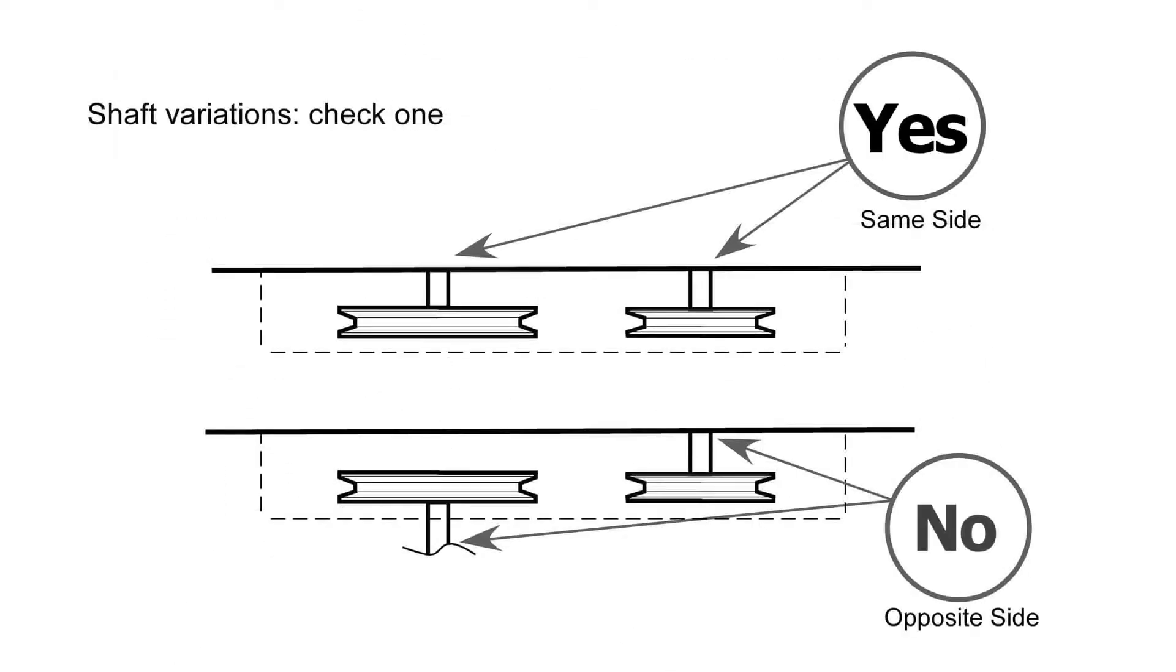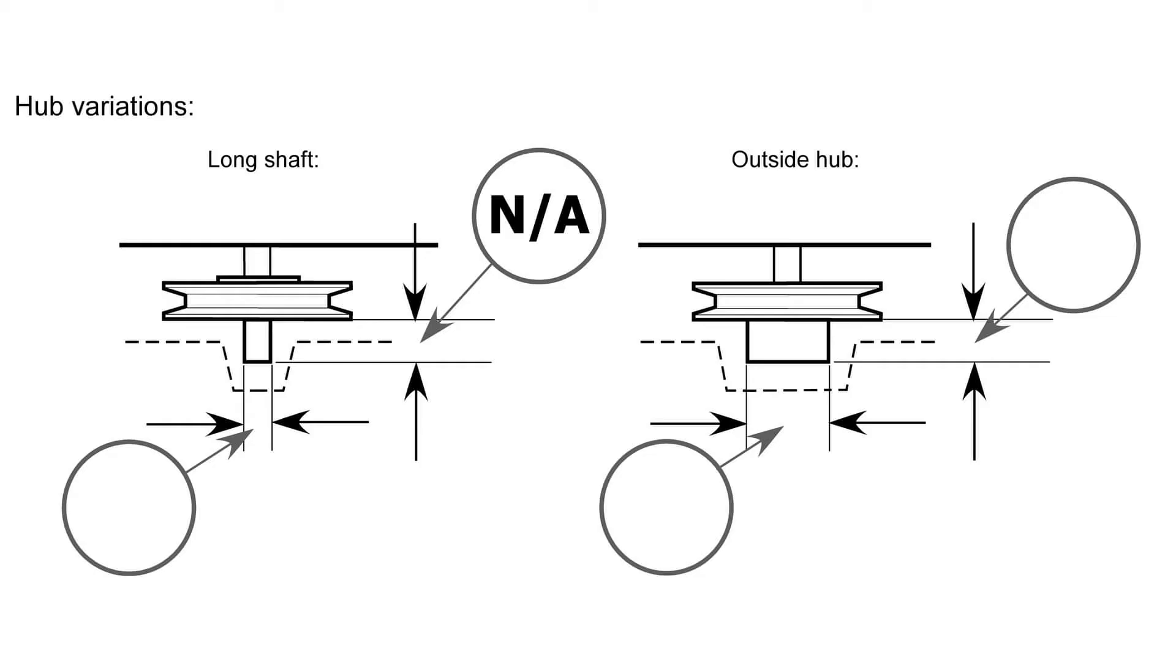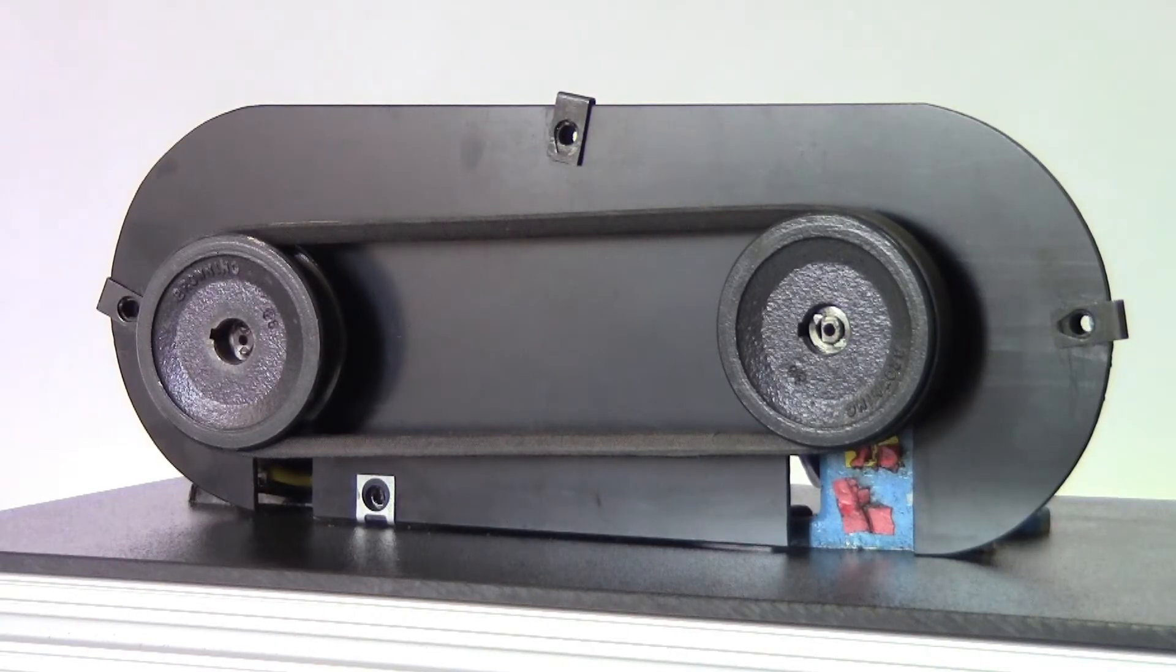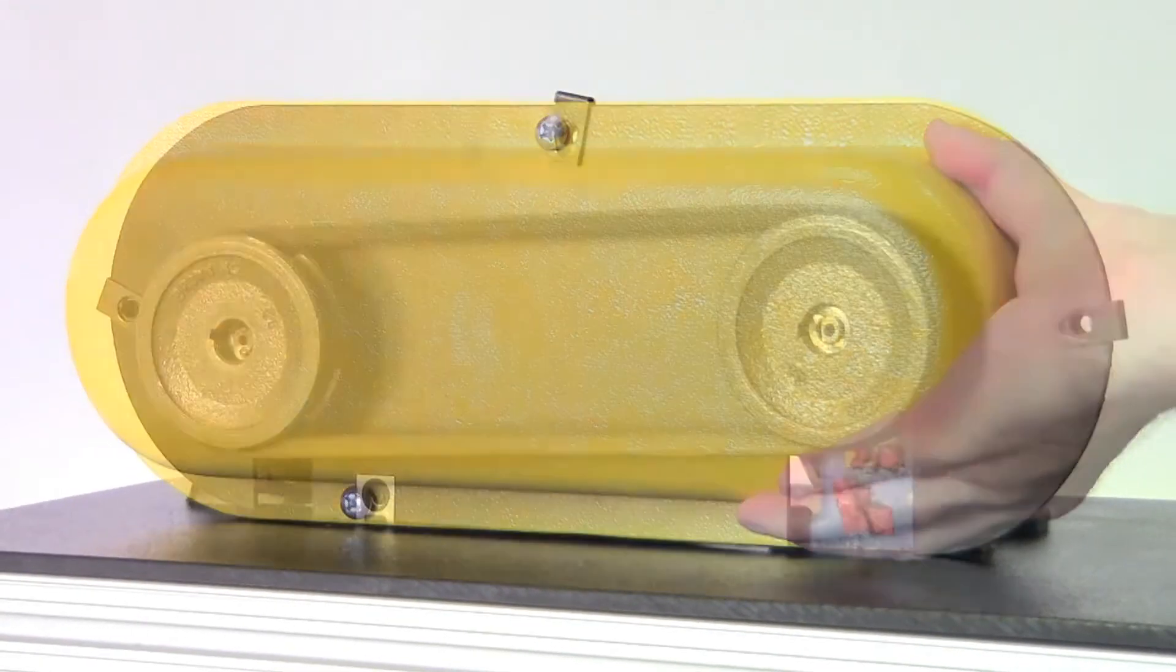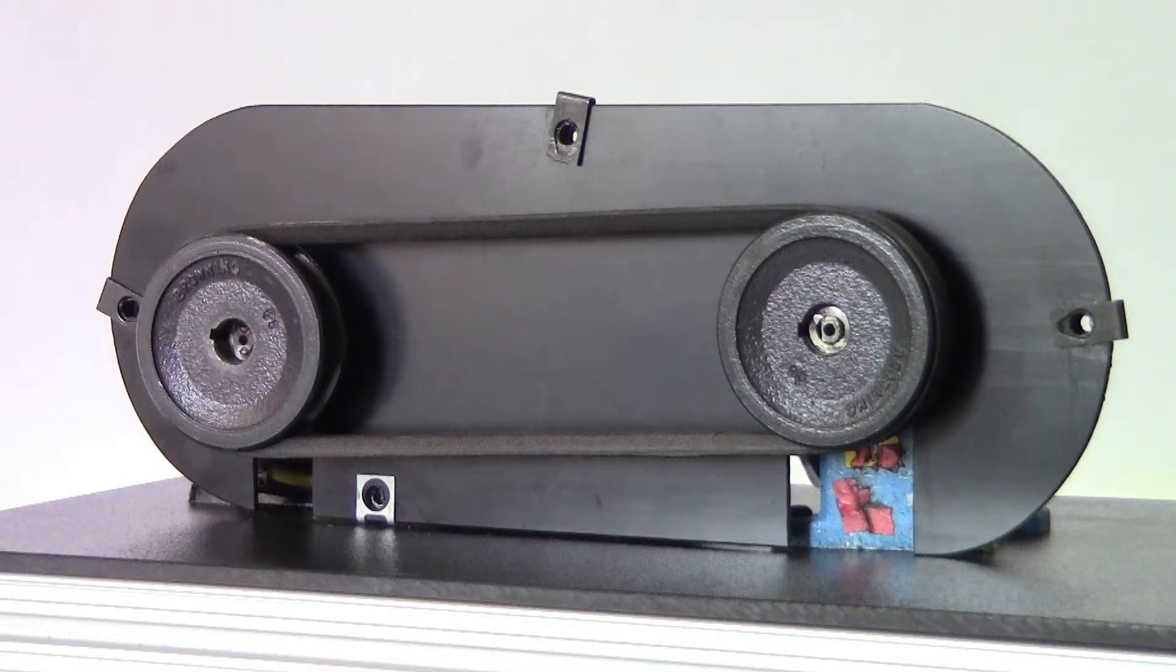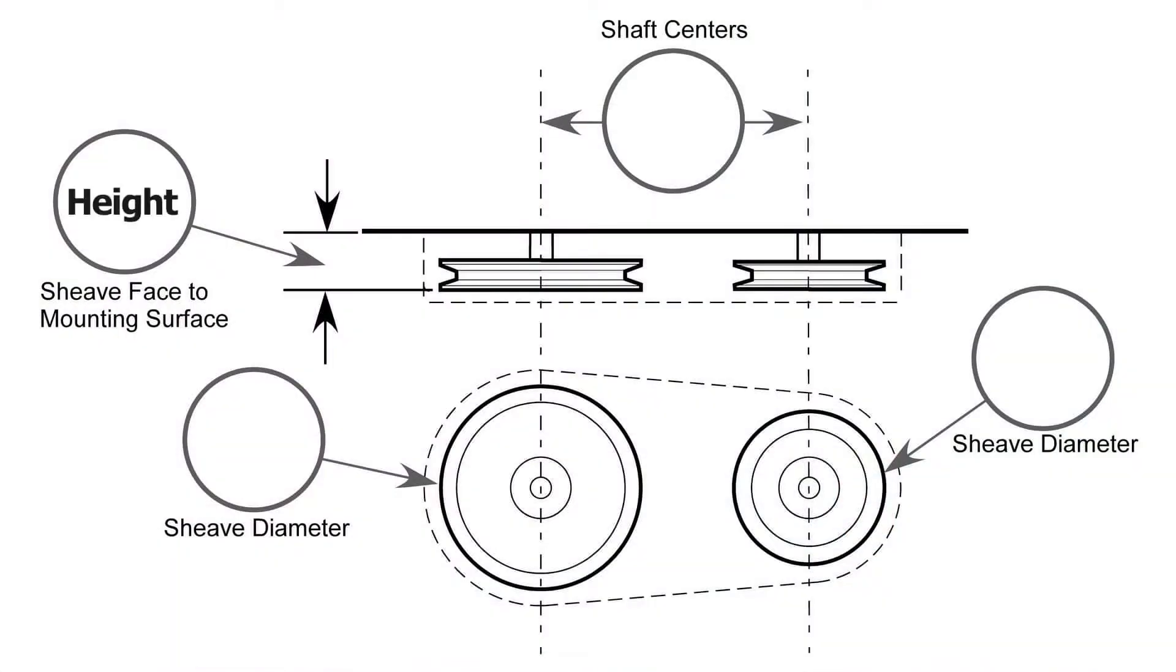Please note that we will not be covering hub or shaft protrusions but they are outlined on the standard belt guard request form. Please also note this video is using a pre-installed backplate as a mounting surface for the guard being shown. Your application may vary. A flat mounting surface is necessary for installation. The first step is to determine the height of the guard.